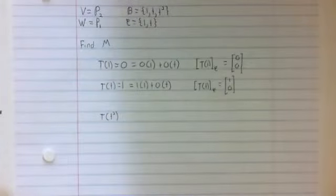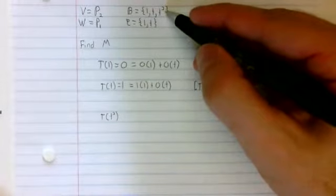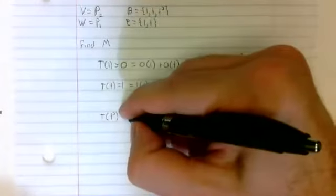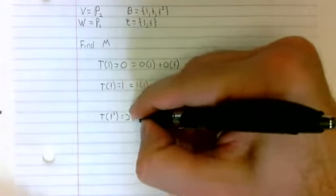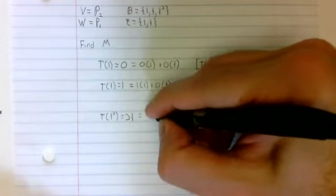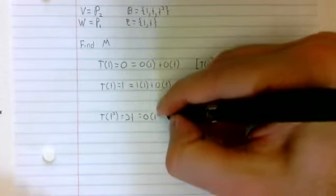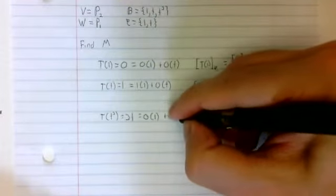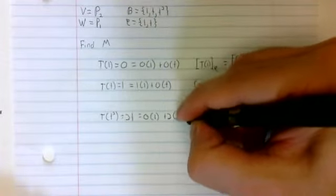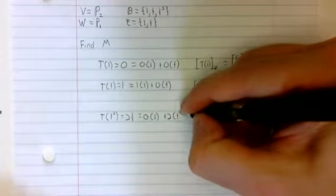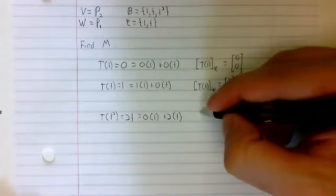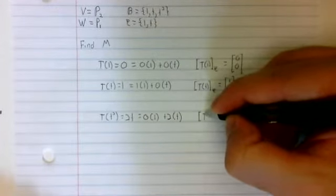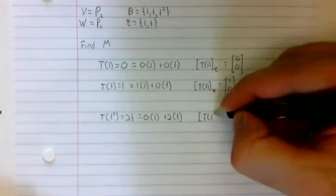t of t squared is not in the basis. Our third basis element in b expressed in terms of the basis elements of c. So our third column.